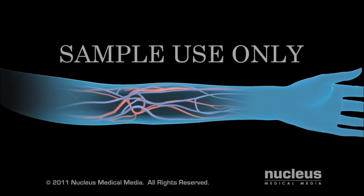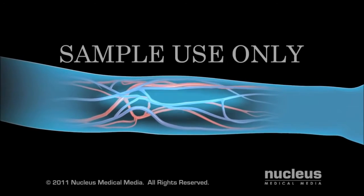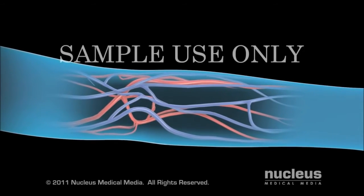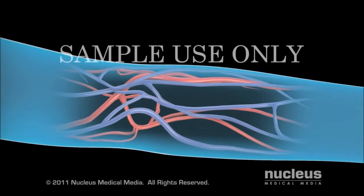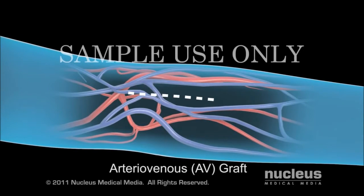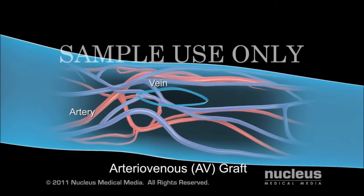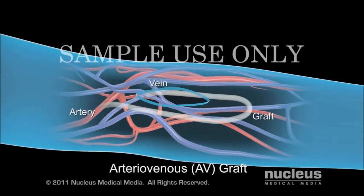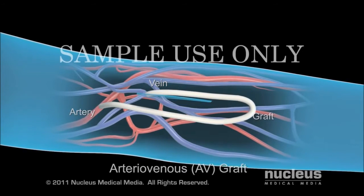To begin, he or she will numb the area with local anesthesia. To construct an arteriovenous graft, your surgeon will make a small incision in your forearm and insert a soft plastic tube called a graft to connect an artery to a vein.